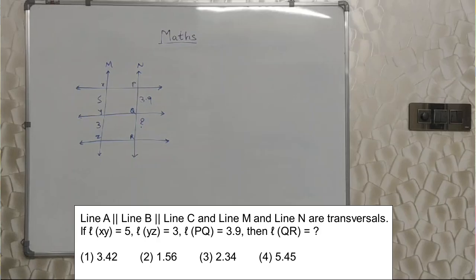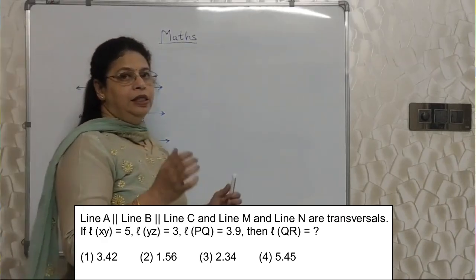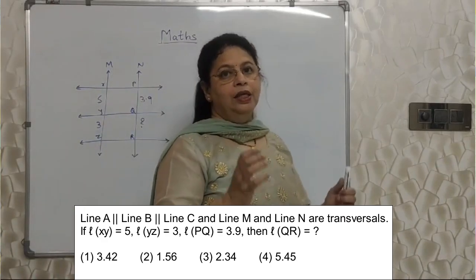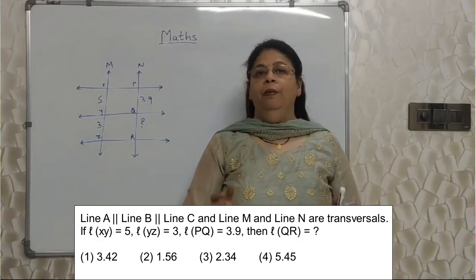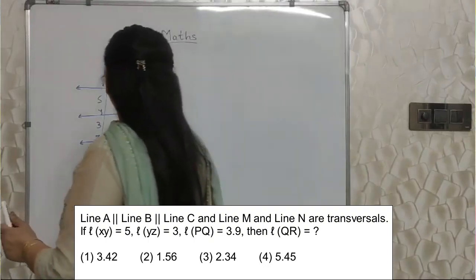Line A is parallel to line B which is parallel to line C. Line M and line N are the transversals. If length of XY is 5, length of YZ is 3 and length of PQ is 3.9, then what is the length of QR? Now, various concepts of parallel lines play a very important role here. I am going to discuss one concept.